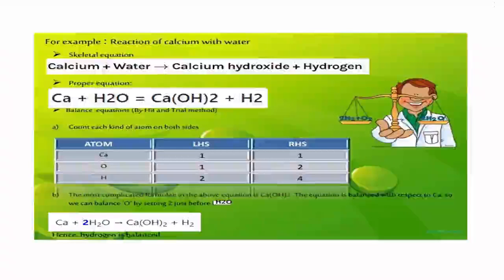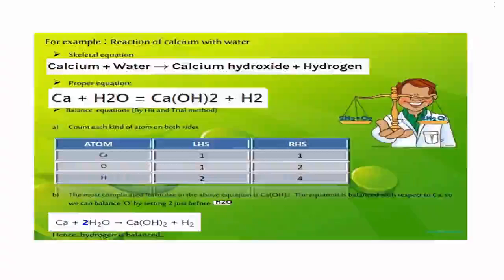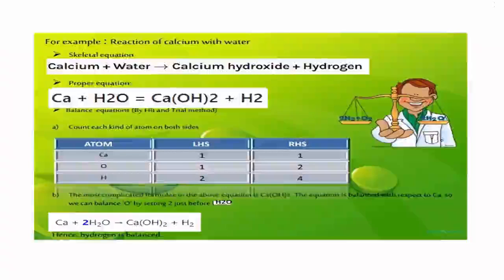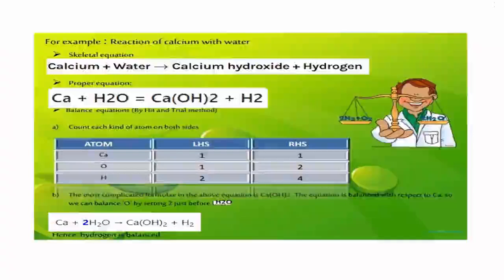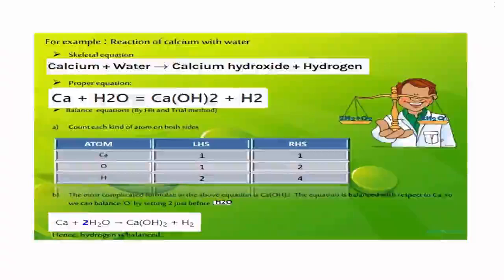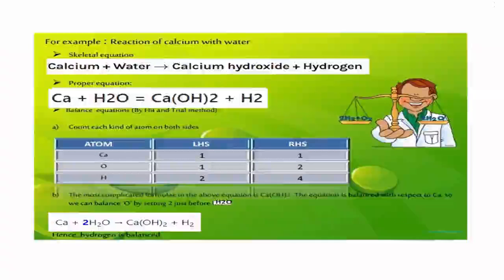The most complicated formula in the equation is Ca(OH)2. The equation is balanced with respect to calcium, so we can balance O by setting 2 just before H2O. Now, Ca + 2H2O gives Ca(OH)2 + H2. Now the equation is balanced.